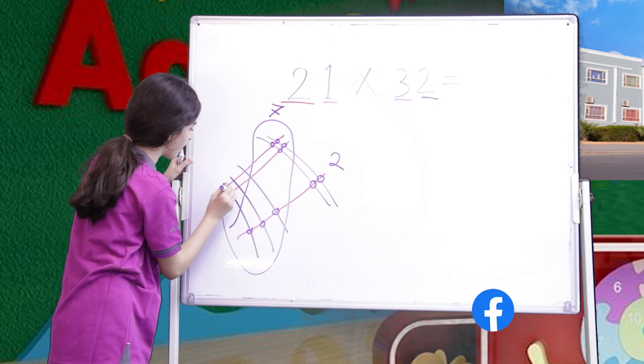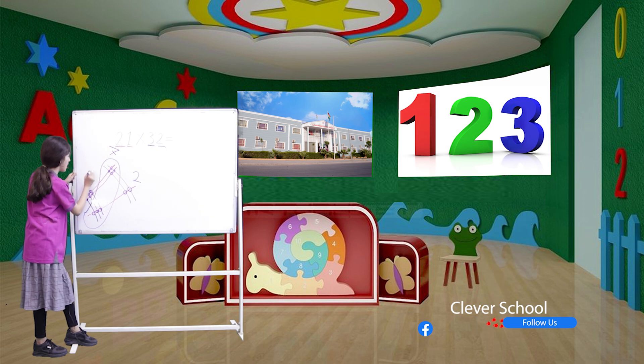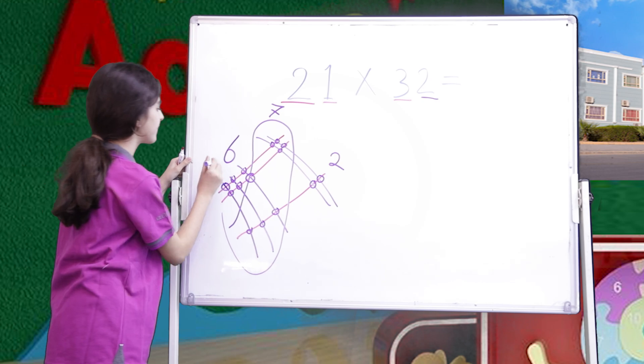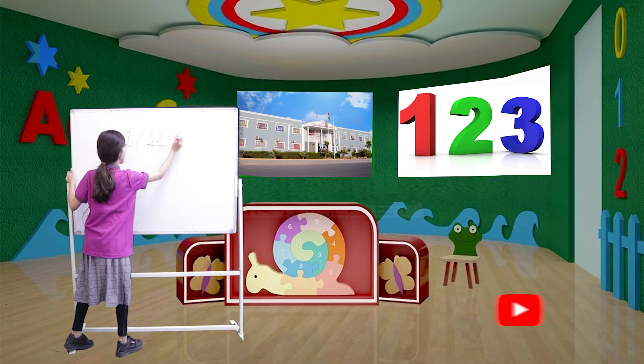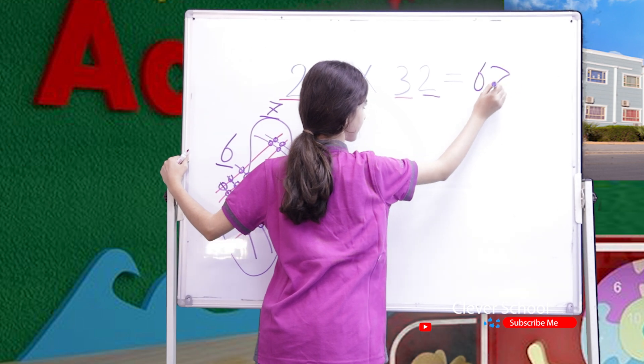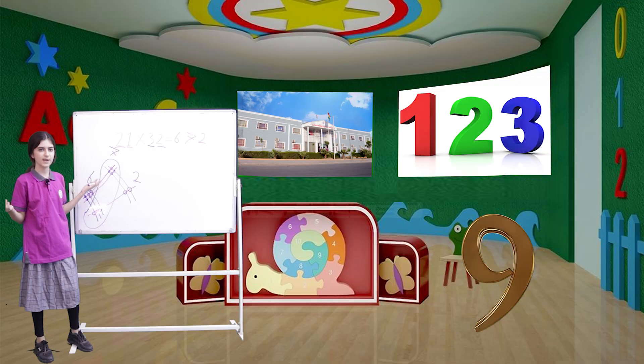And here we have 1, 2, 3, 4, 5, 6. We have 6. And now that's how we solve. First, we have 6. We'll write 6. And then 7. And then 2. Our correct answer will be 672.